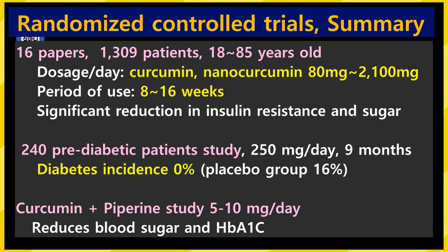In a third study, to compensate for the low absorption rate of curcumin, there are ways to mix different substances together. Among them, piperine — the active ingredient of black pepper — is notable. Mixing piperine and curcumin increases the absorption rate of curcumin, supplementing its disadvantages. Results from taking 5 to 10 mg of this combination formulation per day showed that blood sugar and HbA1c levels were significantly reduced.